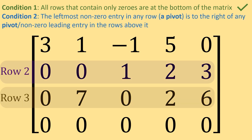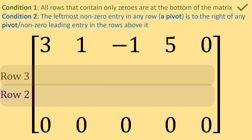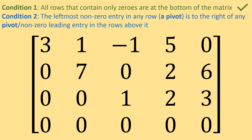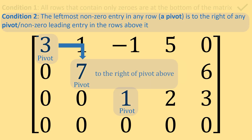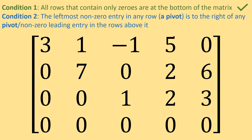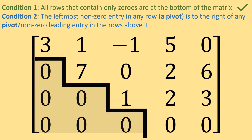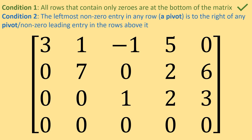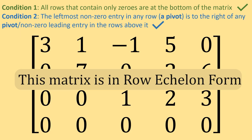What happens if we swap row 2 and row 3? We get this matrix. Each of our pivots — 3, 7, and 1 — are to the right of the pivots above them. Some people refer to this as the stair-step pattern for the first non-zero entries of the rows. This matrix now satisfies both conditions, and so it is in row echelon form.